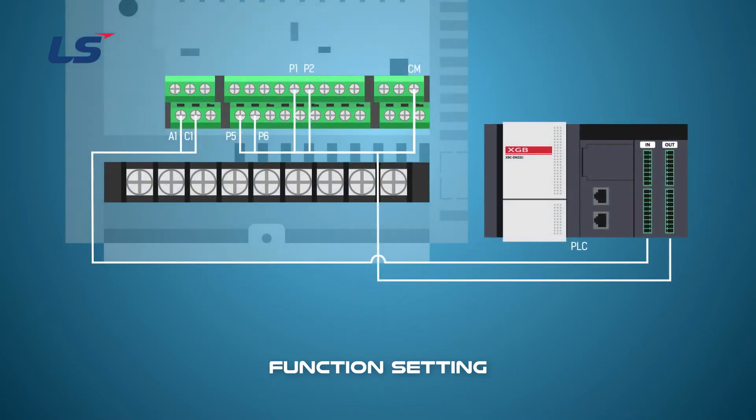The installation of the brake resistor can prevent over-voltage trip caused by the DC link voltage rise by installing the brake resistor at the P and B terminals of the inverter.